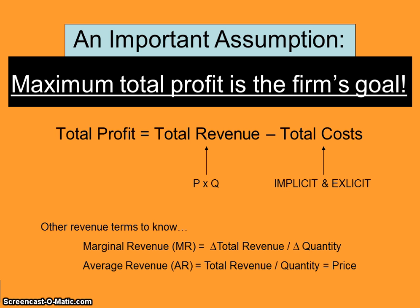A couple of terms you're going to need to know are marginal revenue and average revenue. Marginal revenue is the additional revenue that you bring in when you sell an additional unit of output. For example, if I sold five units and my total revenue was $25, and when I sold six units my total revenue was $28, then the marginal revenue of that sixth unit would be $3. Average revenue is simply total revenue divided by quantity — which equals the selling price.